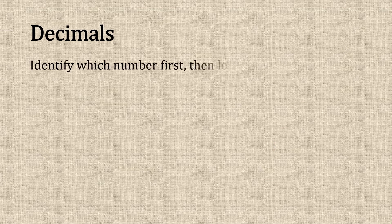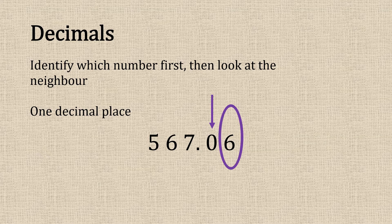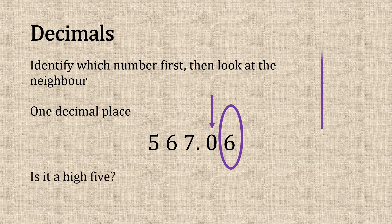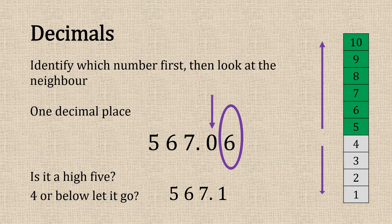Decimals. We need to identify which number first and then look at the neighbour. For one decimal place, zero is the first number after the decimal and the neighbour is number six. Is that higher than a five or four or below to let it go? Well that's higher so we're going to round that number up one.